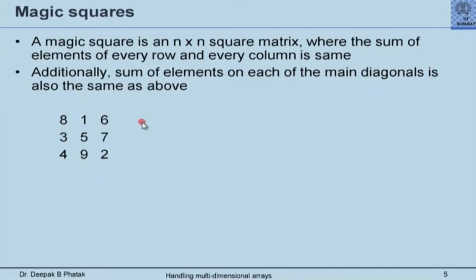A magic square is an n×n square matrix where the sum of elements of every row and every column is the same, and additionally the sum of both main diagonals is also the same. So if you add elements in any row, any column, or either diagonal, they all add up to the same value. Many students may already know about magic squares, as they are known historically from ancient times — mentioned in Chinese and Buddhist literature and extensively in European and US literature.